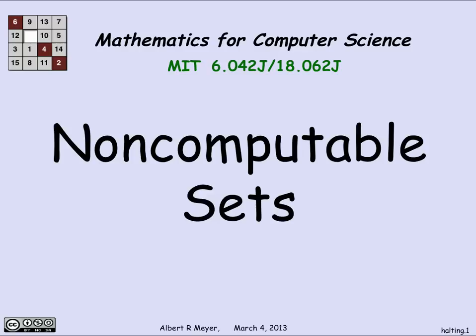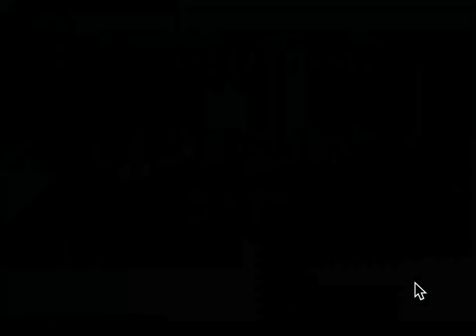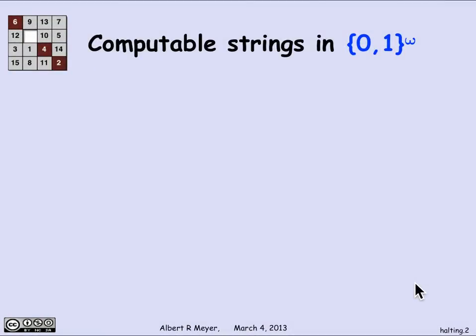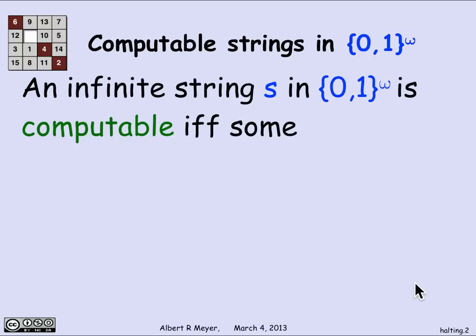Let's look at the class of infinite binary strings. We've seen that there are an uncountable number of infinite binary strings, because there was a simple bijection between the infinite binary strings and the subsets of the natural numbers — that is, the power set of N.